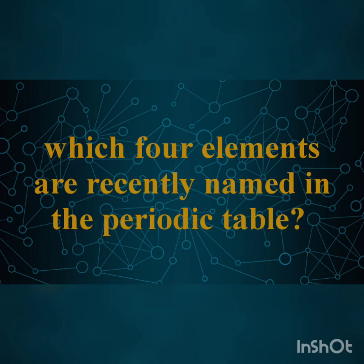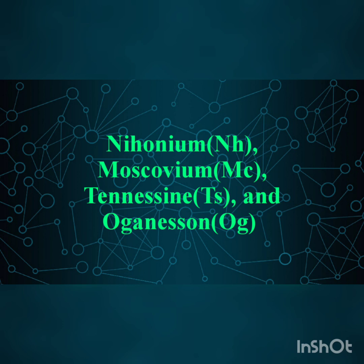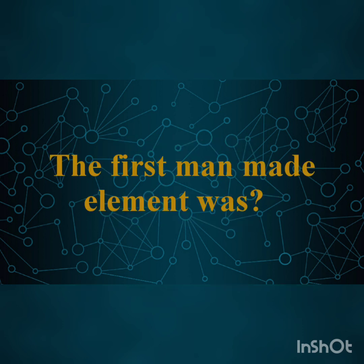Question number 12: Which four elements were recently named in the periodic table? The four recently named elements have atomic numbers 115, 117, and 118.